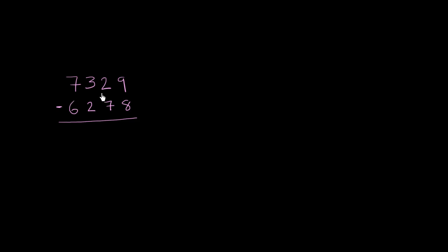We have 7,329 minus 6,278. So let's go place by place and see if we can subtract. 6,278 is clearly less than 7,329, so we should be able to do this.